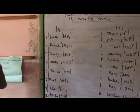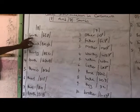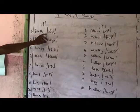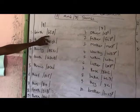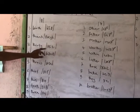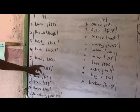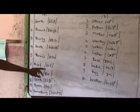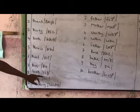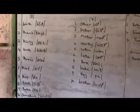Now let's look at words with the voiceless sound. Watch — with this sound we have: birth, thank, thirty, built, through, thief, thin, teeth, three, something.